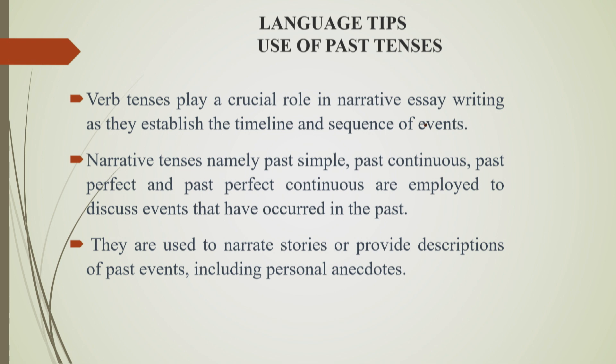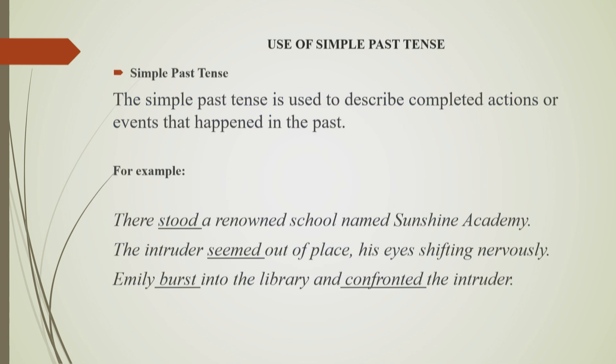Remember to stick to the past tenses and not to mix verb tenses. The simple past tense is used to describe completed actions or events that happened in the past. For example: 'There stood a renowned school named Sunshine Academy.' 'The intruder seemed out of place, his eyes shifting nervously.' 'Emily burst into the library and confronted the intruder.'